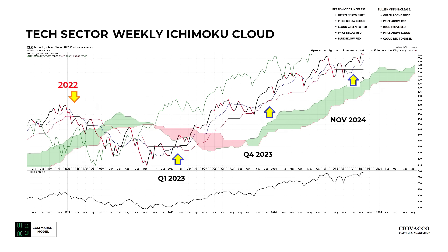If we flip to the cloud of XLK, the tech sector of the S&P 500 in isolation, price-wise we've been consolidating — it's been weak, but it's a good sign. We've nailed down the cross where blue goes above red, green is above price, price is above the cloud, and the cloud didn't even need to flip from green to red — it stayed green the entire time, indicative of consolidation within the context of an existing uptrend. This cross doesn't look anything like the negative cross we got in 2022.